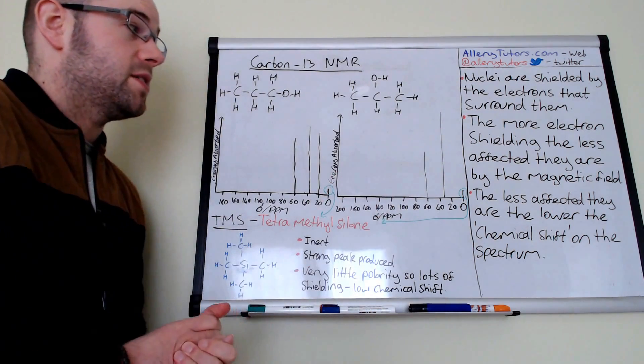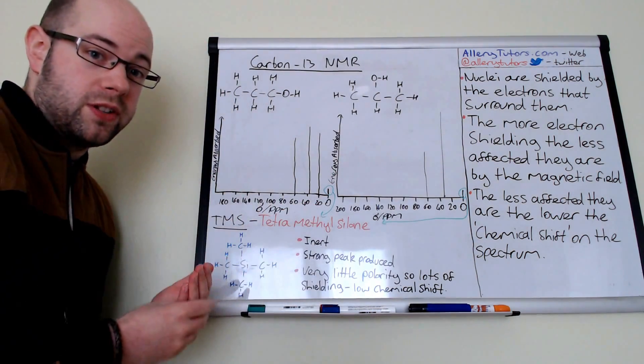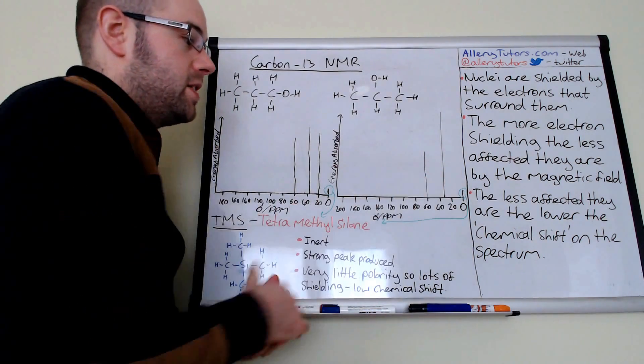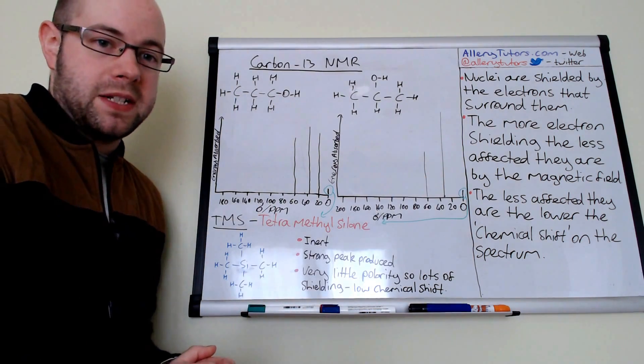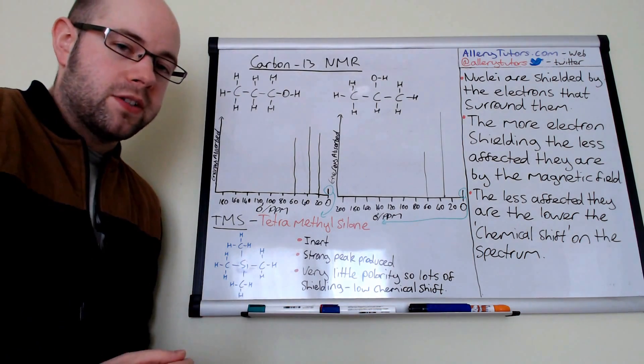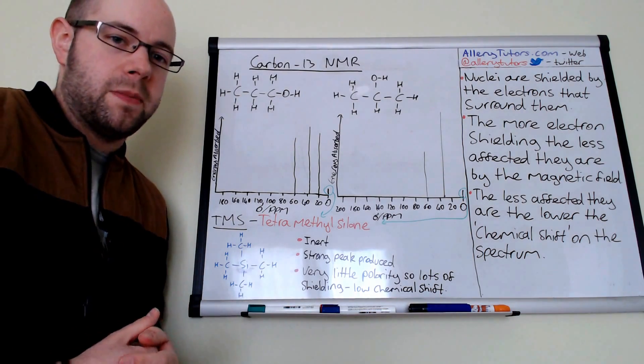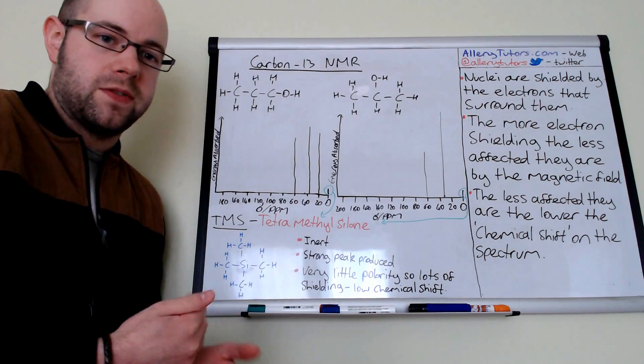And effectively the more shielding they have, then the less affected they are by a magnetic field and therefore the chemical shift is a lot lower. So in other words, the less shielding the carbon has, the more affected they are by the magnetic field and therefore they'll shift a lot further up.